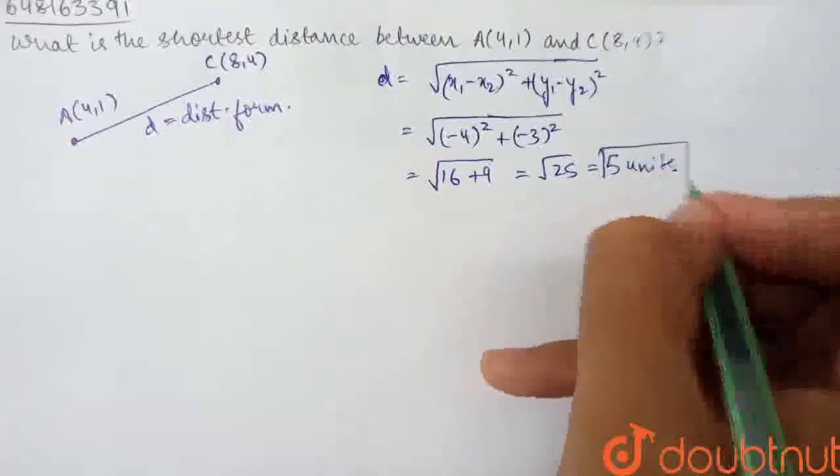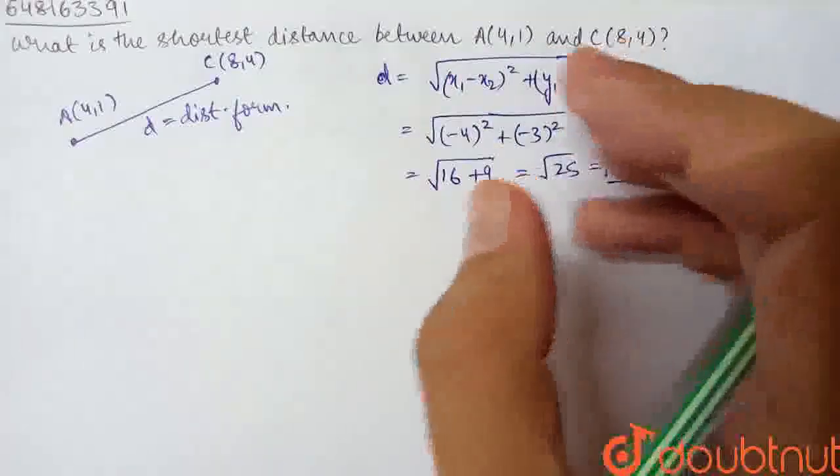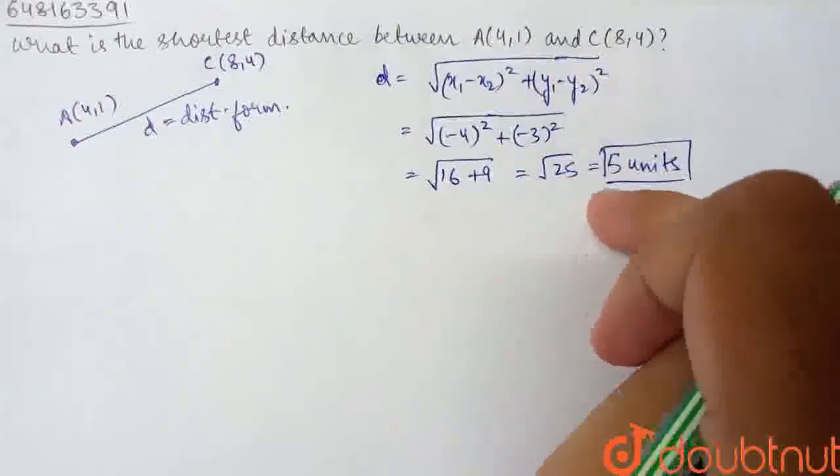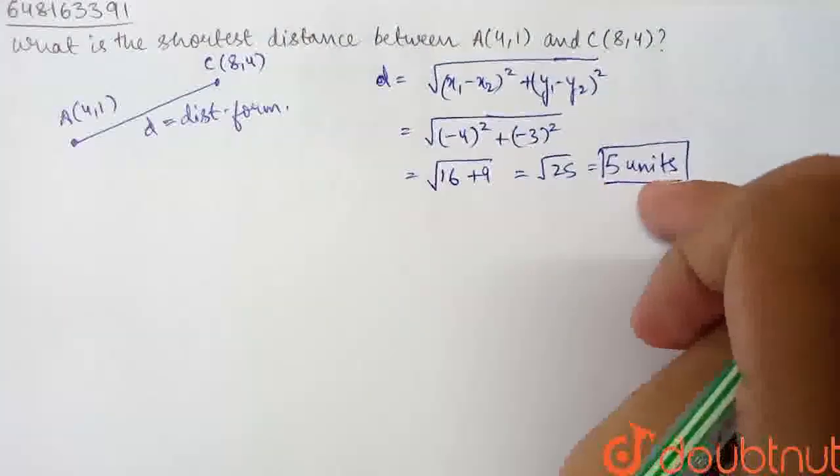Hence, the distance between points A and C, the shortest distance between points A and C is equal to 5 units.